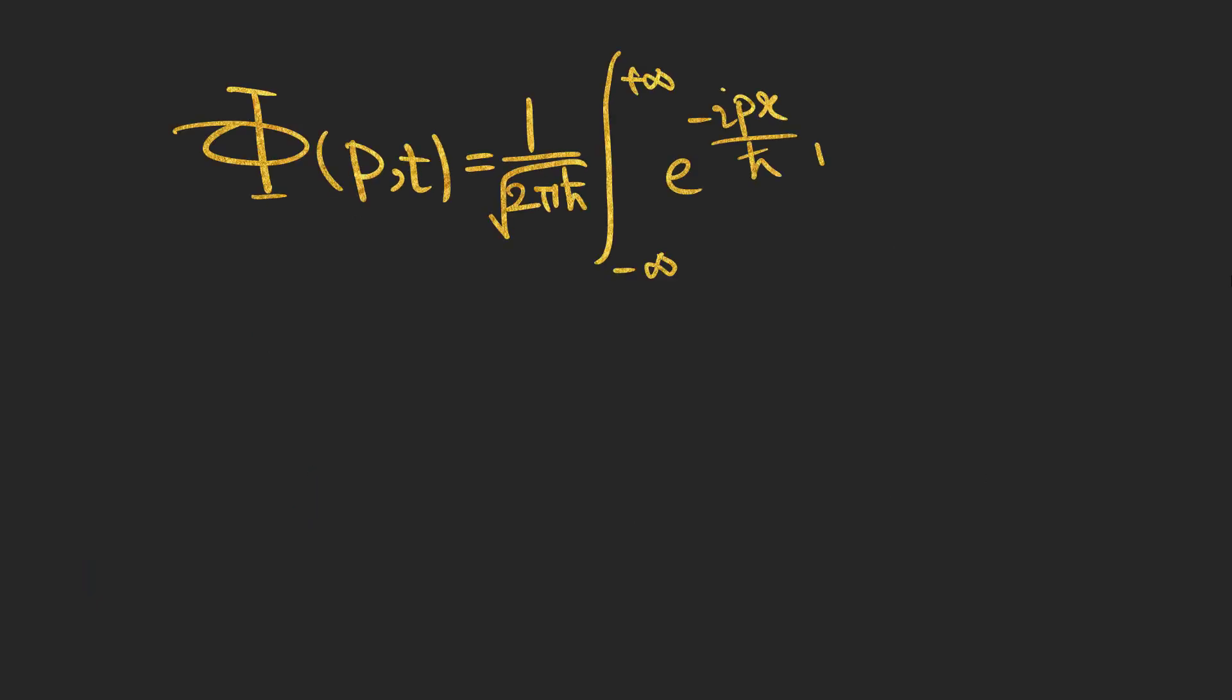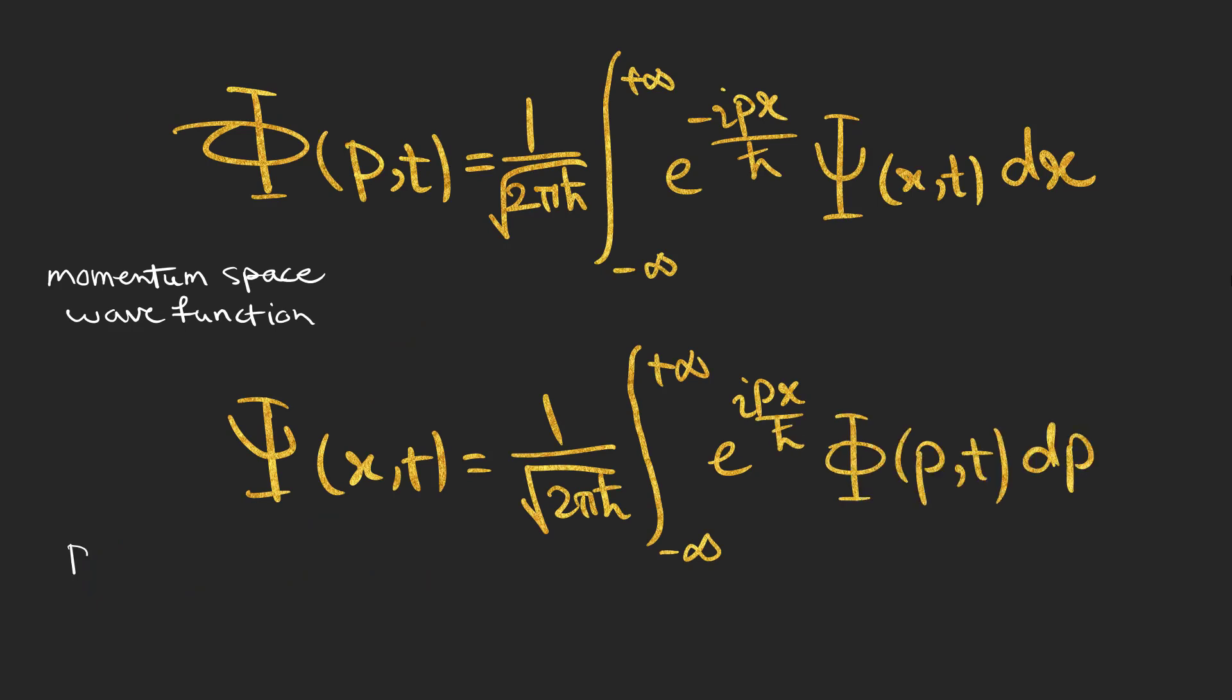This quantity is very important which has been given a special name the momentum space wave function phi of p and t which is the Fourier transform of the position space wave function.